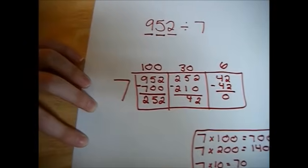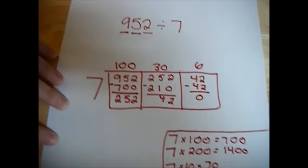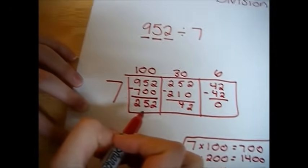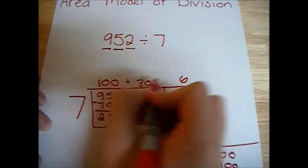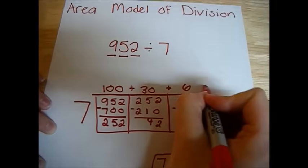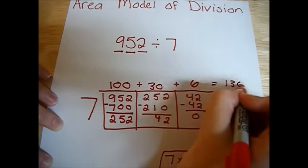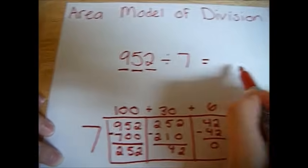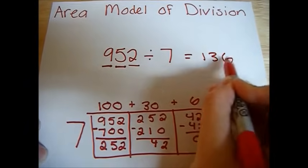Now remember, if you can't think of your multiplication tables off the top of your head, you should start to study them, but for now you can do that work down in your workbox. So that leaves us with 0. We add up what's on the top, and we get 136. So we know that 952 divided by 7 equals 136.